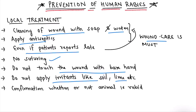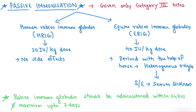Confirmation of whether or not the animal is rabid is required in category 2 and category 3 risk — we will study about this later. Now let's start with passive immunization, which is given only in category 3 bites.